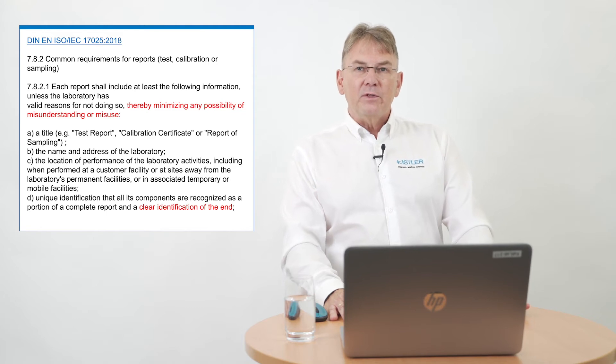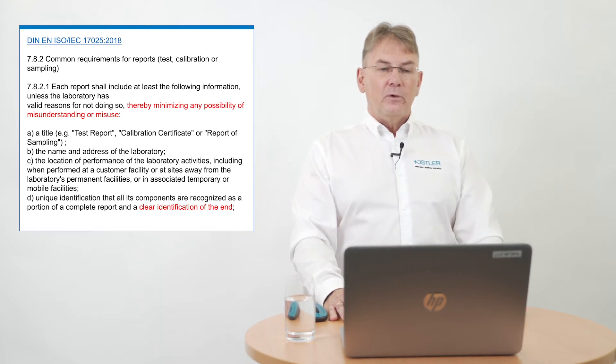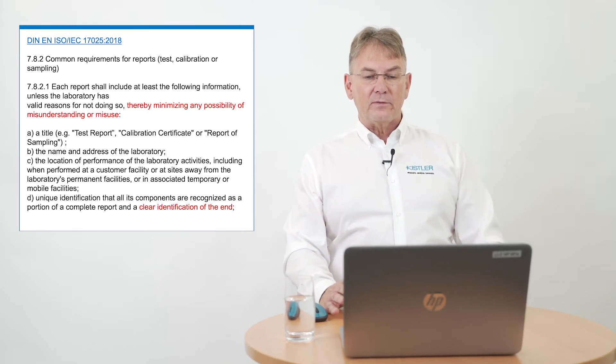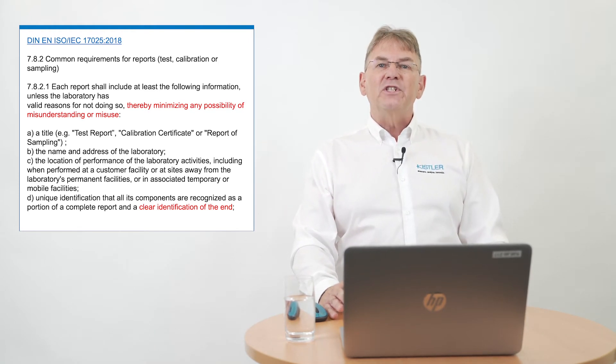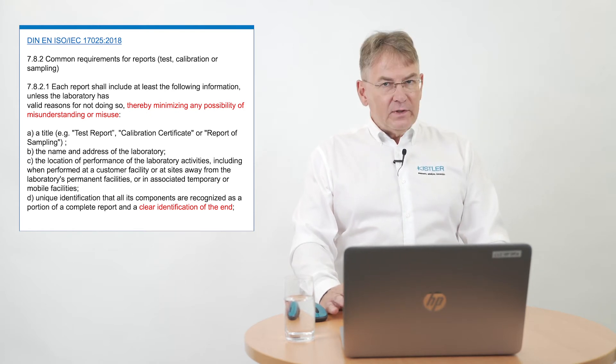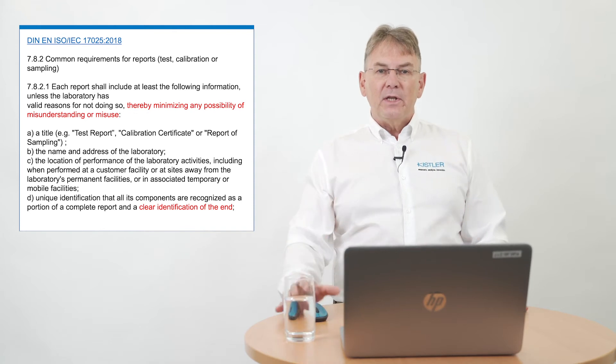Something else I want to point out is the date of issue of the report and the identification of the person authorizing the report. Something you may overlook is actually a big change. In previous calibration certificates, you could expect a signature from the laboratory. Right now, ISO 17025:2018 requires in section 7.8.2 the identification of the person authorizing the report. That means you find nothing more than just a name — possibly of the laboratory leader or his deputy. No signature is needed anymore; just a printed name is fine.